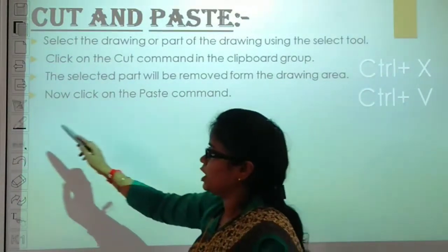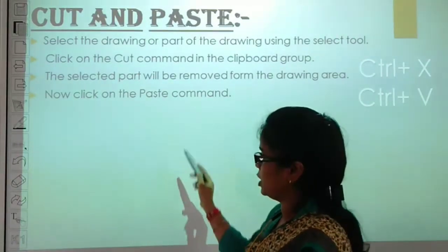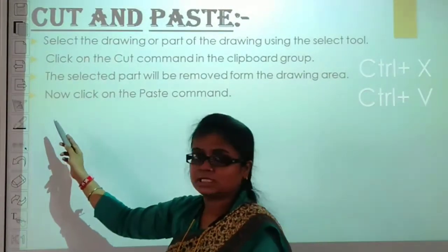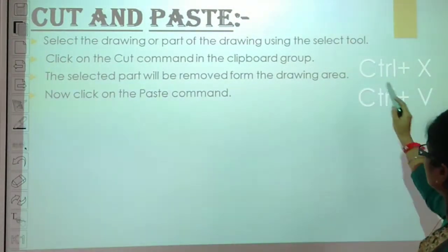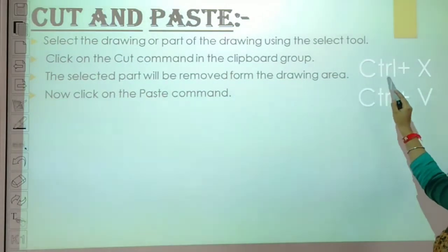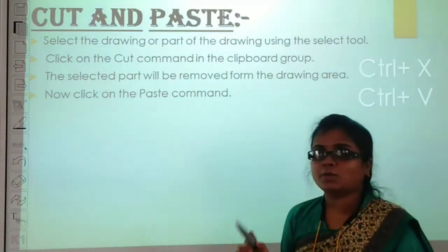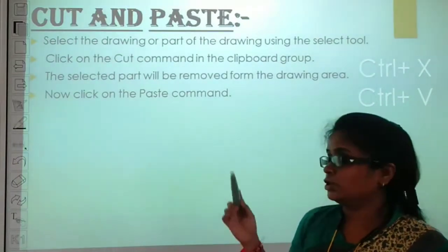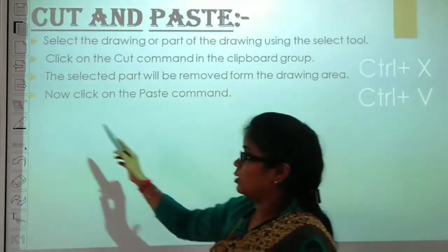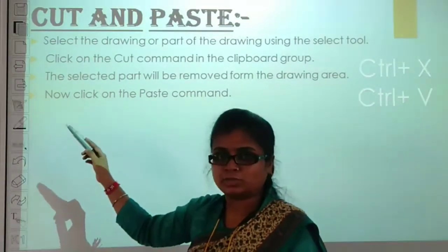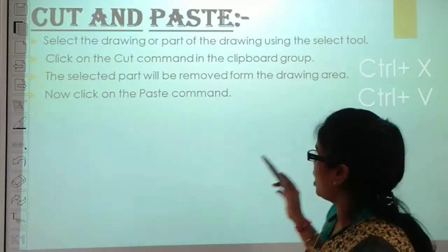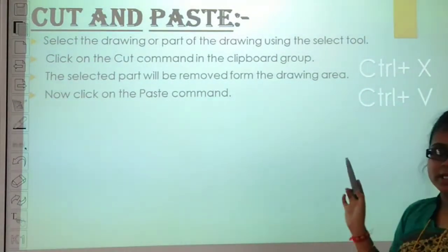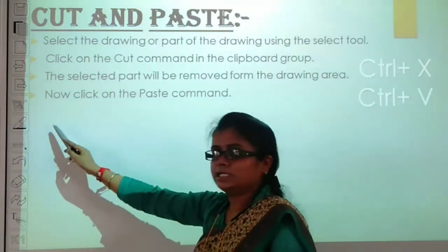We have a drawing here. We want to remove it and move it somewhere else. What do you do? Press Control plus A to select all. Control is on the keyboard — press both Ctrl and A together. This will select the drawing. Then press Ctrl plus X to cut it. You will see that your drawing is removed from here.